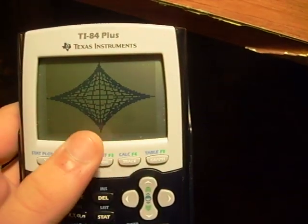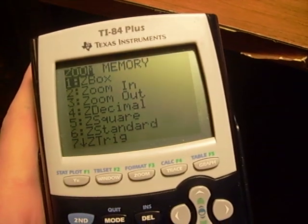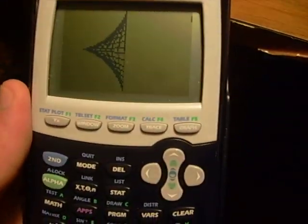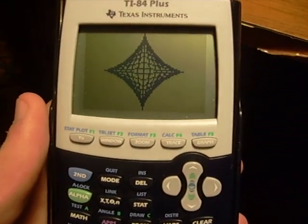That's pretty darn cool. You can square it by hitting zoom, 5, and you get that.